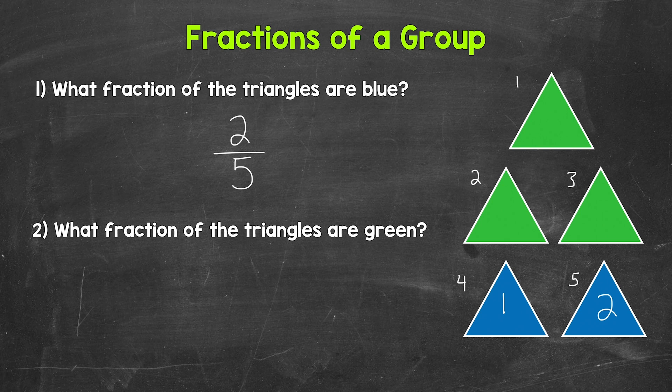Let's move on to number 2 and try another one. So what fraction of the triangles are green? Well, we know that our denominator is 5. That's the total number of triangles. So let's put our denominator of 5. And now we need our numerator. So how many triangles out of the 5 total triangles are green?